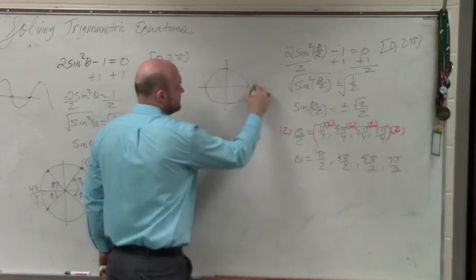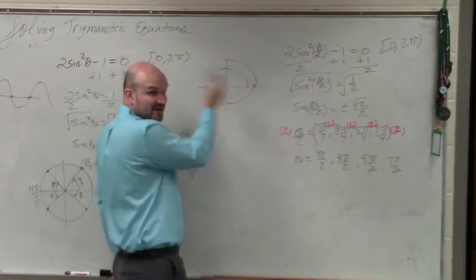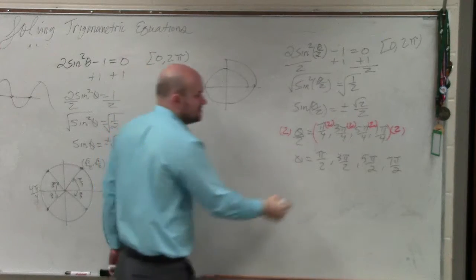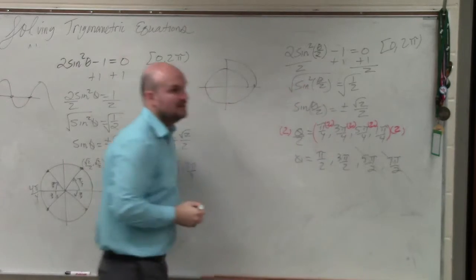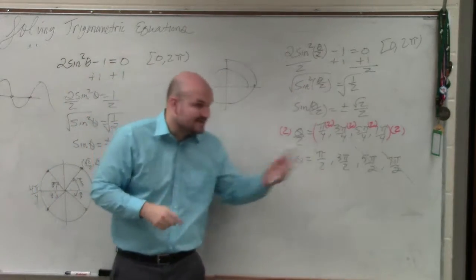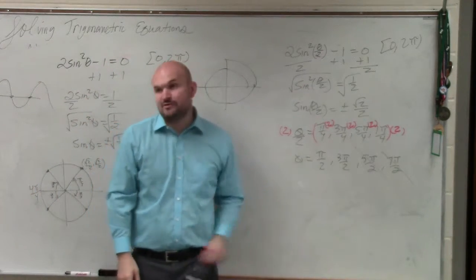1 half, 2 halves, 3 halves, 4 halves, 5 halves. That's bigger than 2 pi, right? So that's not a solution anymore. 7 pi halves is definitely not a solution. So the only solution to this equation is pi halves and 3 pi halves.